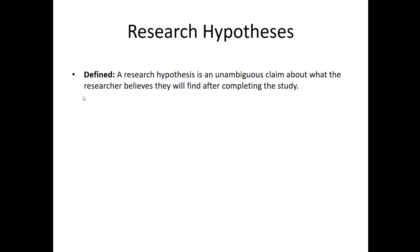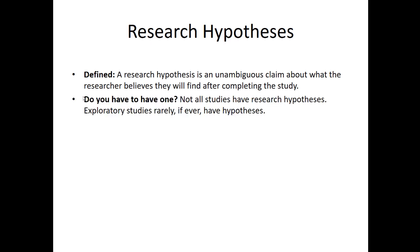Let's briefly talk about research hypotheses. A research hypothesis is an unambiguous claim about what the researcher believes they will find after completing the study — a clear, unambiguous prediction. It's important that after conducting the analysis, you can clearly state whether it's true or false, whether you're right or wrong. Not all marketing research projects have hypotheses. Exploratory studies, for example, rarely if ever have a hypothesis — if they're about clarifying terms or finding unanticipated things, that runs counter to what a hypothesis is. You can't claim something unambiguously if you don't really know what you're looking for. In other instances, a marketer might have a clear research question but no pre-existing hypothesis.